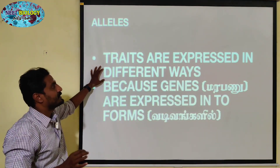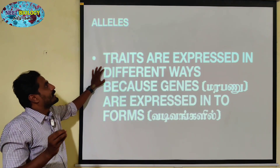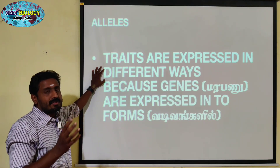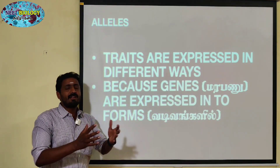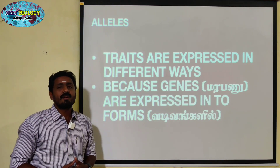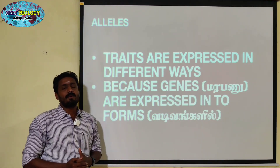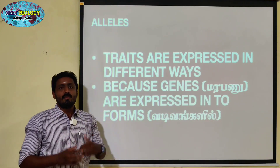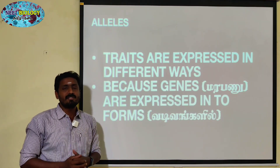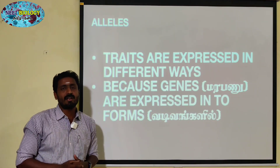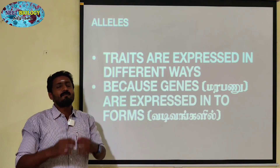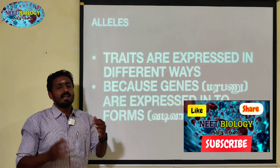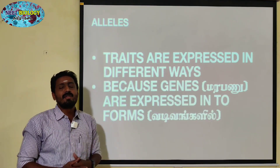Traits are expressed in different ways. One trait or character can be expressed in different forms. For example, height is one character — and it can take different forms such as tall or dwarf. This is the concept of alleles: one character can have different forms.